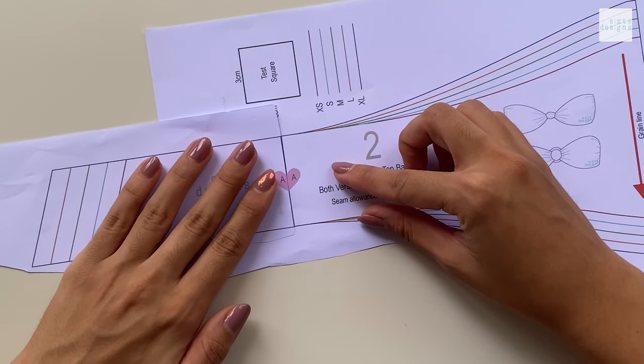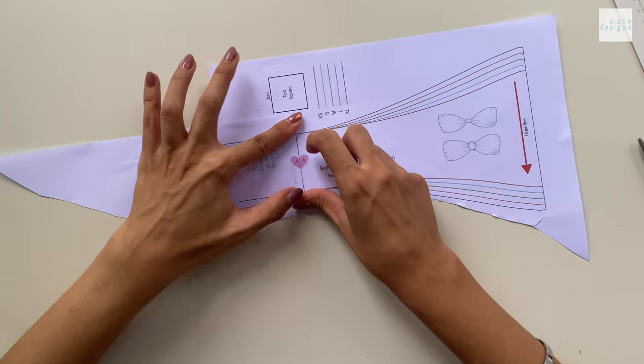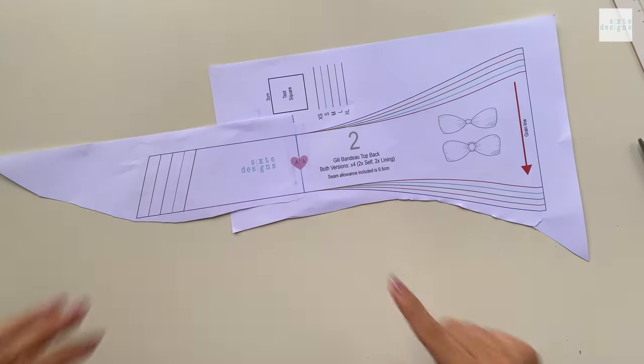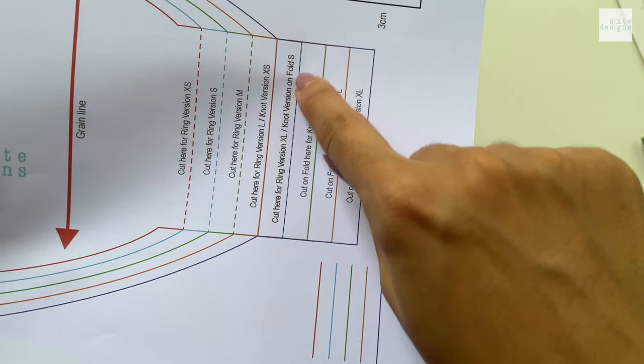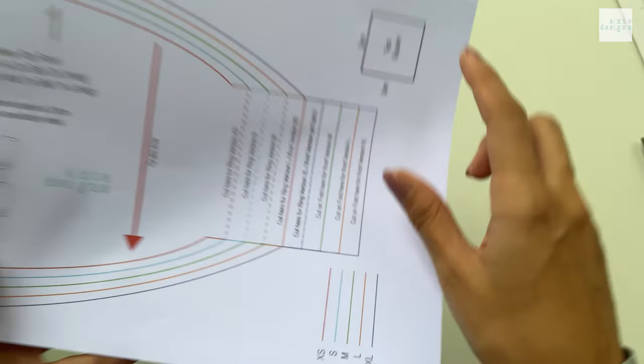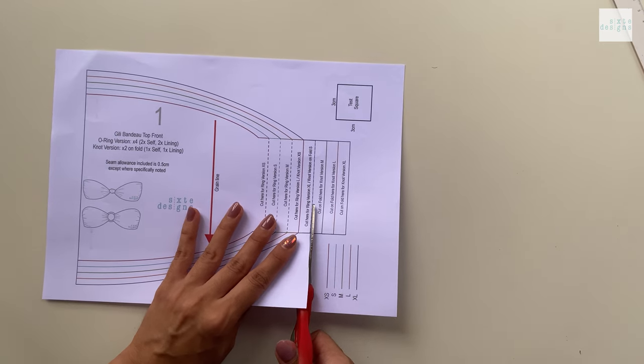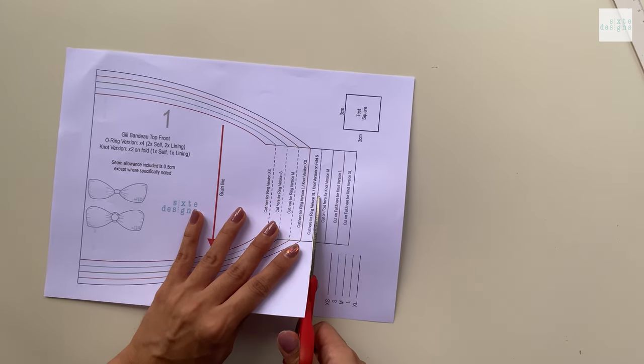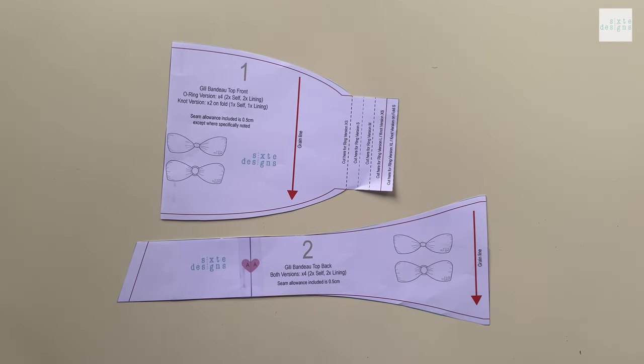Now where there are half hearts, you want to match the letters together and tape or glue it down before you cut it out. And also there are notes where you need to cut the pattern depending on the style, so today we're doing the knot version so I'm going to be cutting it right there for my size. You'll end up with two pattern pieces like this.